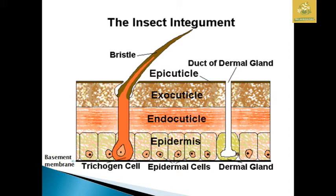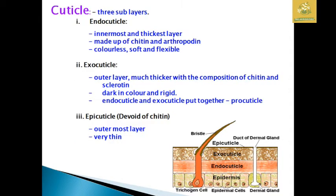In the insect integument you can see the trichogen cell. The base form contains the trichogen cell as well as the epidermis. The dermal gland is used for the secretion of the waxy layer in the insect. The trichogen cell gives rise to a hair-like structure called a seta, which is non-articulated. The apicuticular region contains the duct of the dermal gland, which excretes the outer waxy layer.